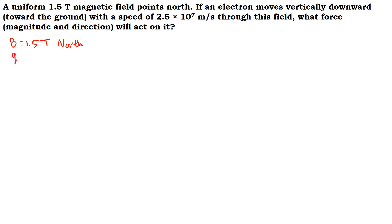If an electron moves - when they mention electron we should know that the charge Q is negative 1.6 times 10 to the power of negative 19 coulombs - moves vertically downward toward the ground with a velocity or speed of 2.5 times 10 to the power of 7 meters per second downward.